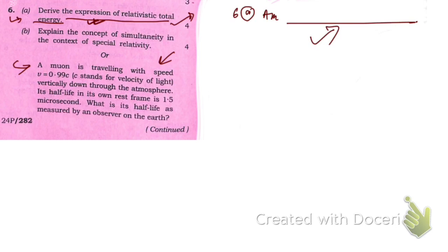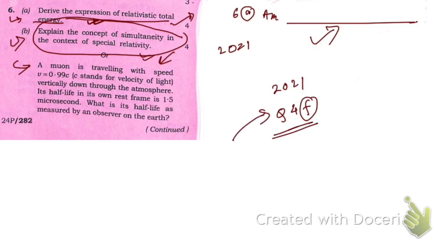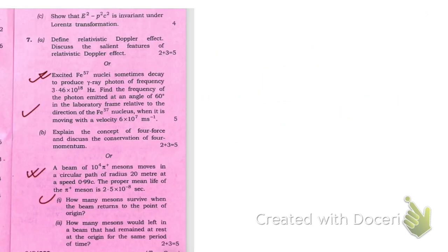Question 6b: Explain the concept of simultaneity in the context of special relativity. This question was already asked in 2021, question number 4f. If you have solved the 2021 DSC paper 1, you will find this answer in the same playlist, so you have already done this question.